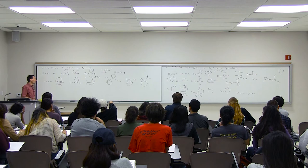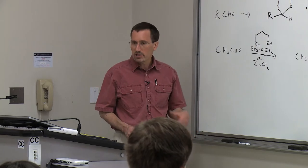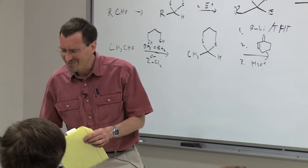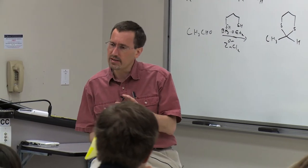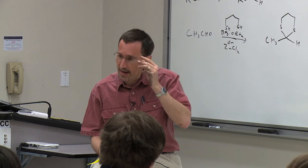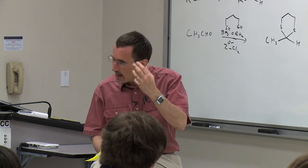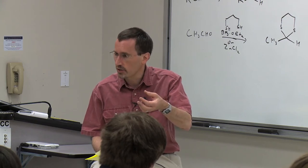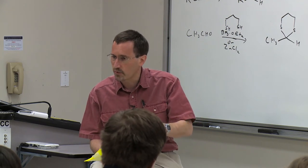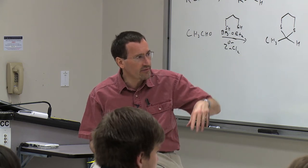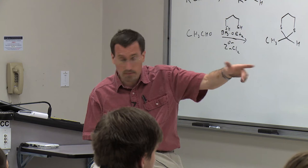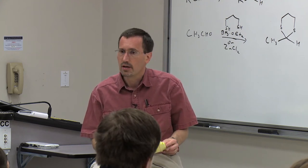Why does the dithiane attack at 1,2 rather than 1,4? It's more basic—harder. In general, if you have equilibrating conditions with a base that's not too basic, you'll get Michael addition unless you're very sterically hindered at the beta position. If you're more basic, you tend to get 1,2-addition. In the cyanohydrin case, the pKa makes the proton a lot more acidic, so it does go 1,4.